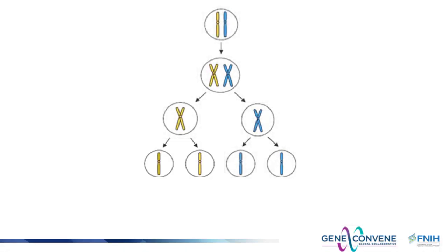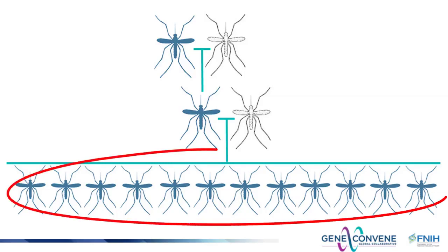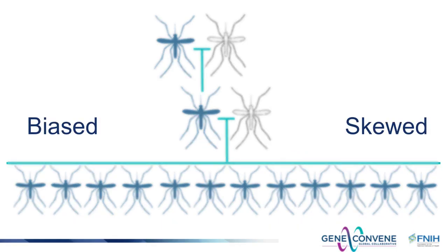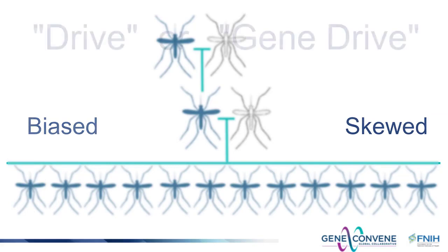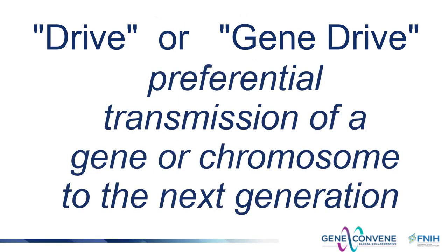But there are variations of this process that result in different outcomes. Take a look at this pattern of inheritance. In this case the blue form of the gene is not transmitted to half of the progeny as expected, but instead is transmitted to all of the progeny. In this case the transmission of the blue form of the gene is biased, skewed. The blue form of the gene is exhibiting drive, or gene drive, referring to the preferential transmission of that gene to the next generation.